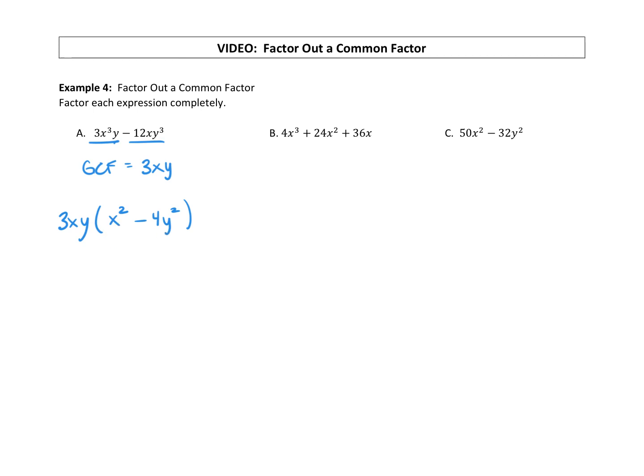So a key thing to look for is the fact that this is just two terms. Anytime it's two terms, you want to check to see if you have a difference of squares. Did we square anything to get an x squared? We did. Do we square anything to get a 4y squared? Yeah, that's a 2y times a 2y. And are we finding the difference? Yes, there is subtraction.